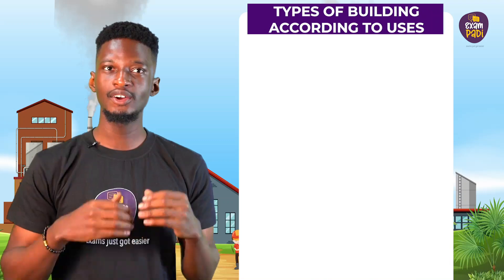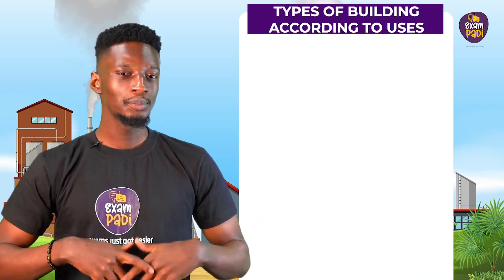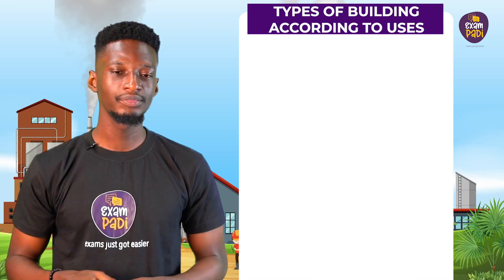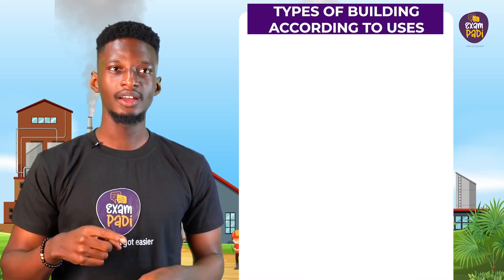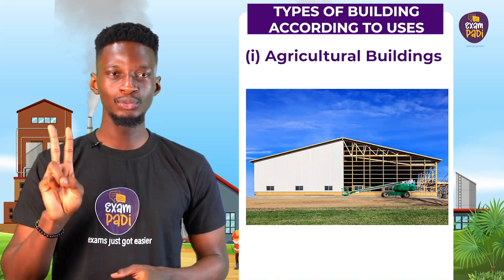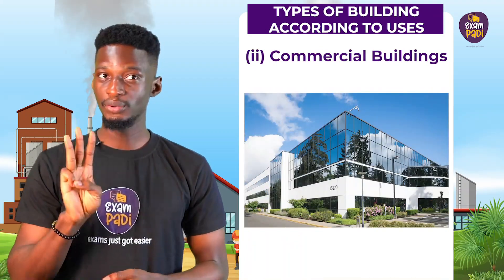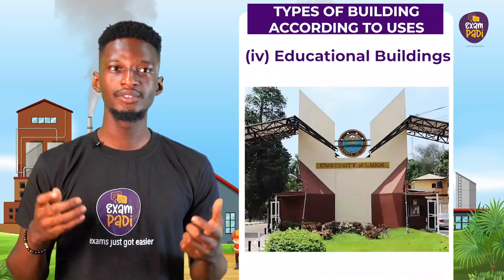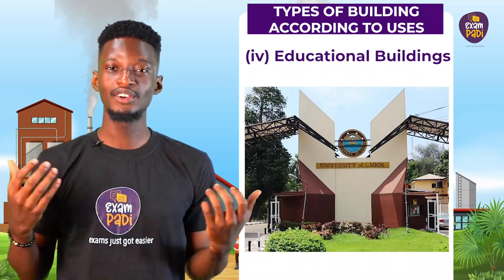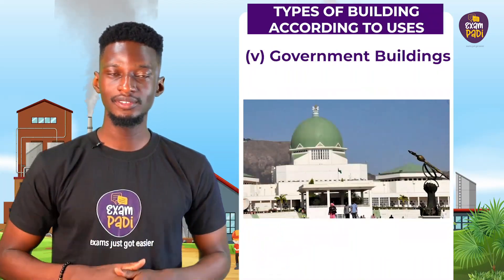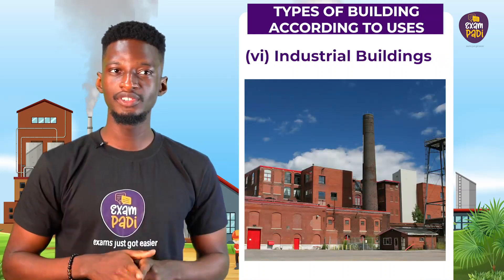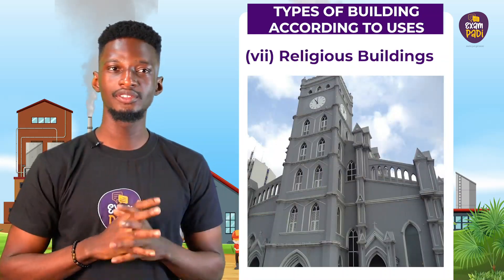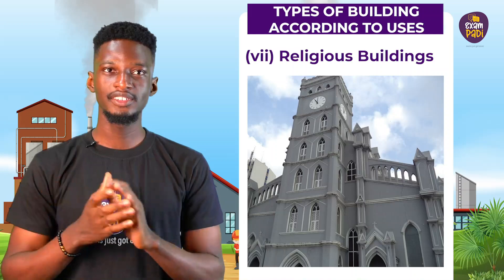Types of buildings according to uses. Buildings are generally classified according to their uses. These are: 1. Agricultural buildings. 2. Commercial buildings. 3. Residential buildings. 4. Educational buildings. 5. Government buildings. 6. Industrial buildings. 7. Religious buildings.